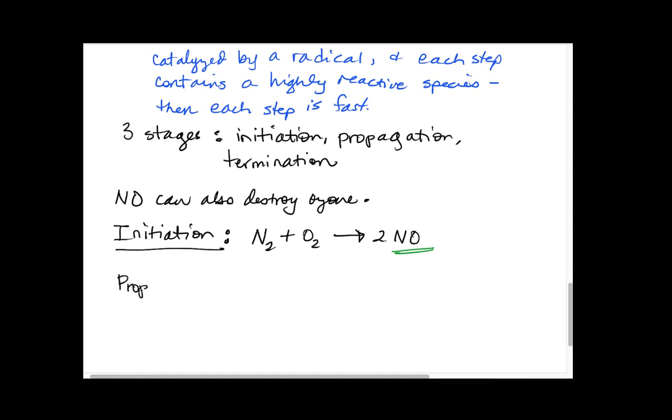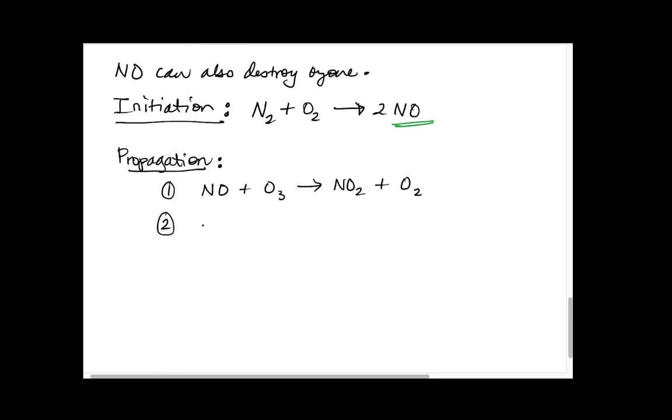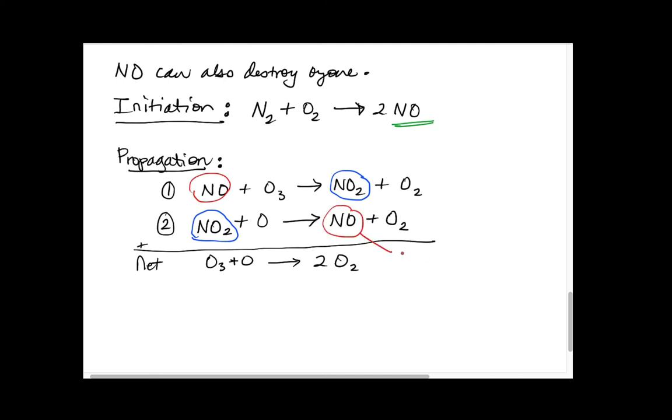This is our initiation in that it produces some nitric oxide. Then the next step would be propagation. In the propagation step, the nitric oxide is doing its destruction. In our first step, nitric oxide interacts with an ozone, forms another compound, and breaks off one of those oxygens to make an oxygen molecule. Then the NO2 reacts with an oxygen radical in the atmosphere to make nitric oxide and O2. So again, just like before, our net reaction is O3 plus O making two oxygen molecules. The NO2 is a reaction intermediate and the nitric oxide is regenerated—that's the catalyst.